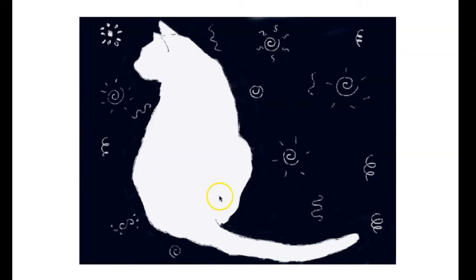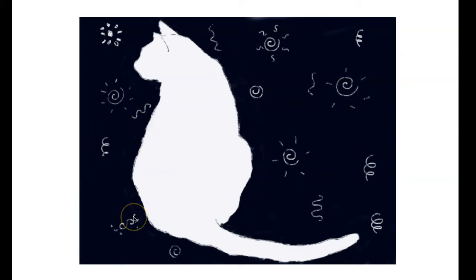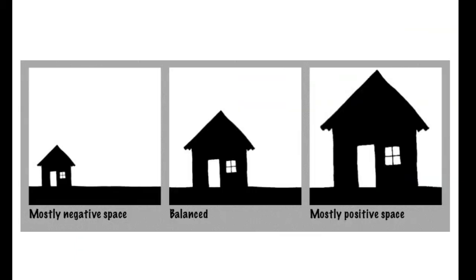Here the cat is the main idea, which makes the cat the positive space. When I first learned this it was a little confusing, so I pictured drawing a big X on the main idea — what is this painting about? An X is also kind of like a plus sign, which is usually positive, so my X would go on my cat, which is the positive space. Everything around the cat is the negative space.